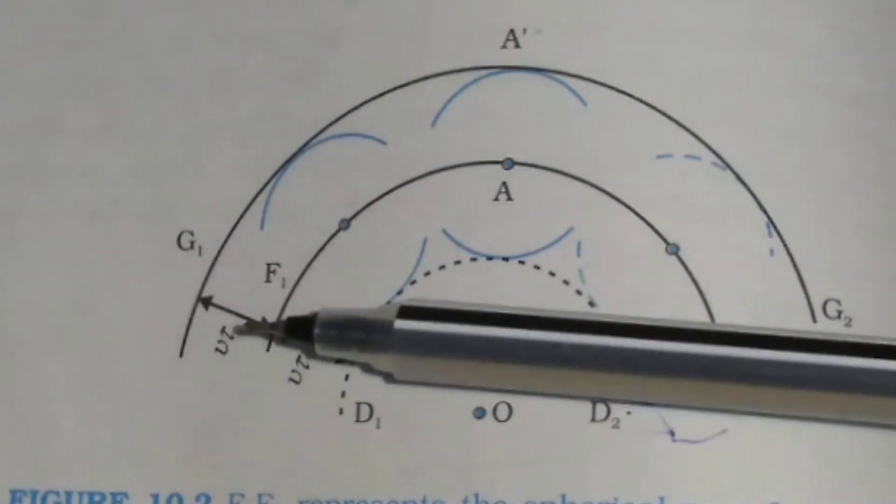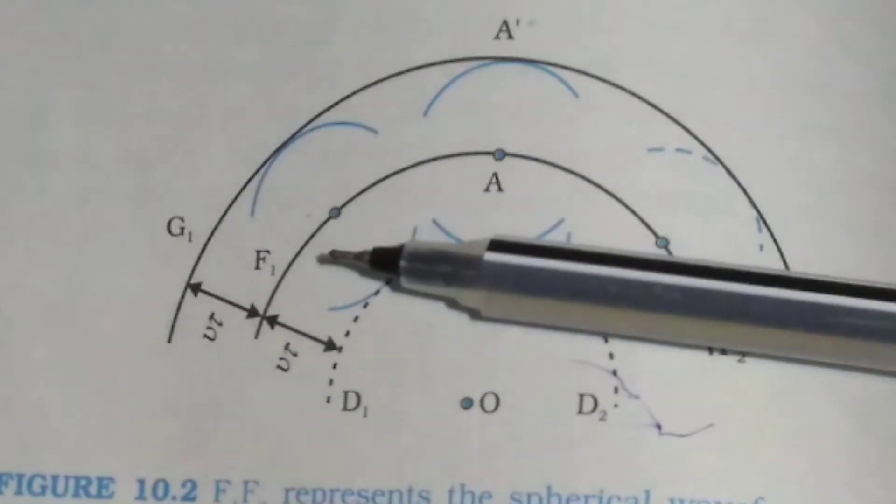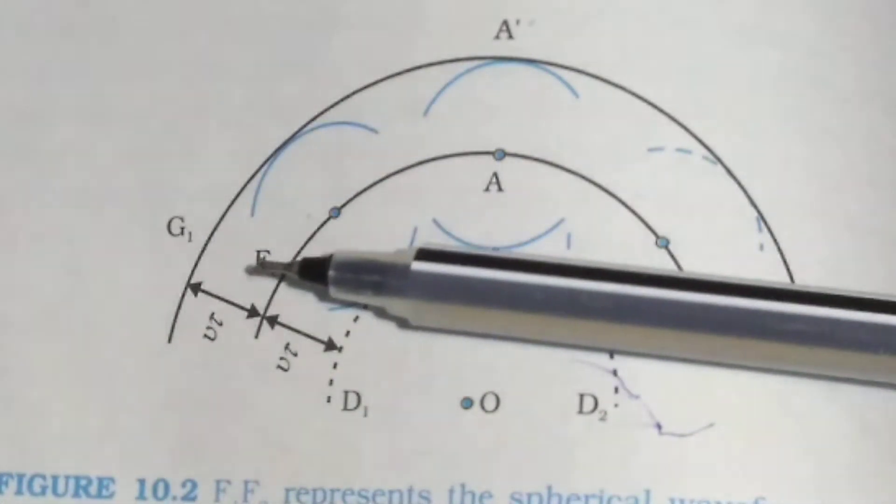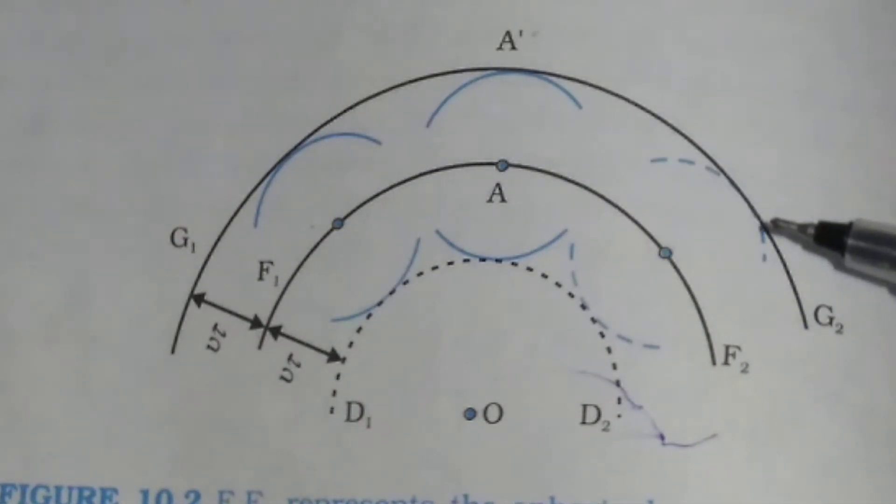Now here V is the speed of the wave in the medium. And now draw common tangent to all these spheres. This is the common tangent to all these spheres.